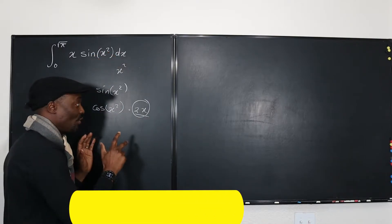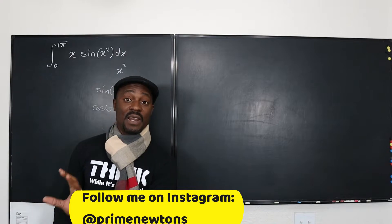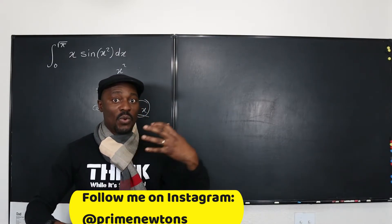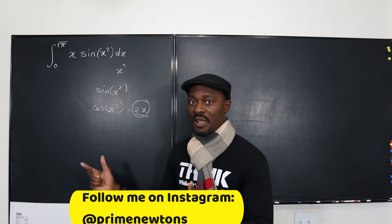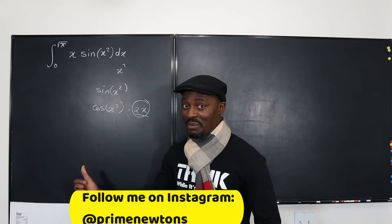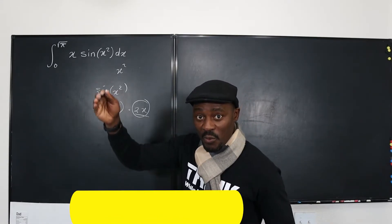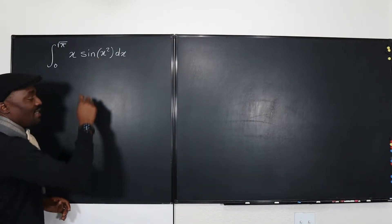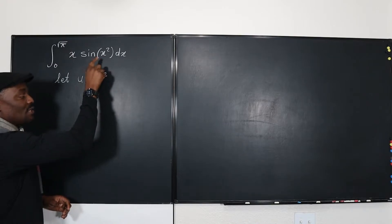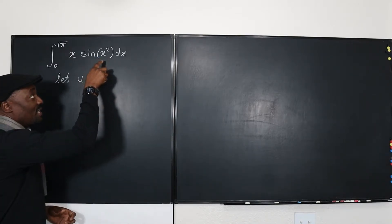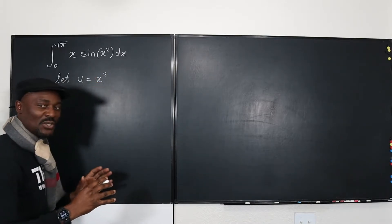The principle is: does the derivative of one function contain the other as a scalar multiple? If yes, u-substitution is your way to go. For most students in Calculus 1 who aren't using integration by parts yet, u-substitution is the method. So we say: let u equal x squared, because differentiating x squared gives 2x, which contains x.